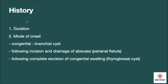Now coming to history: the first is duration; second is mode of onset — whether it may be congenital as seen with branchial cyst, following incision and drainage of abscess as seen with perianal fistula, or following complete excision of the congenital swelling as seen with thyroglossal cyst.